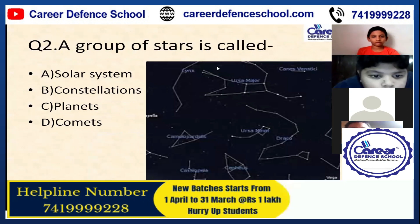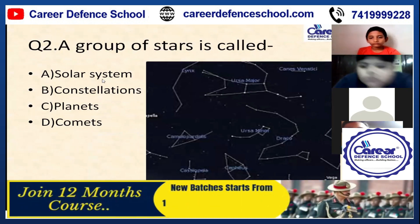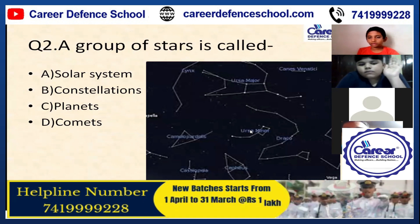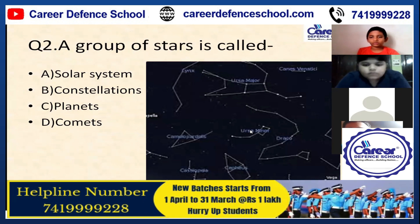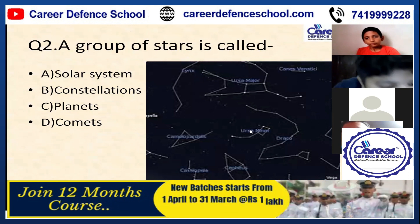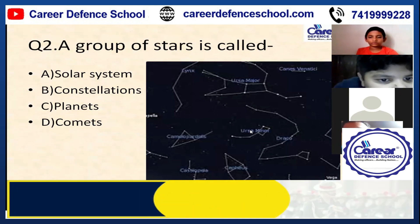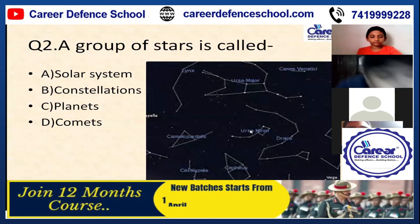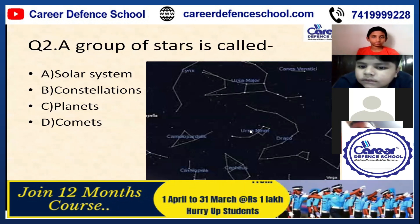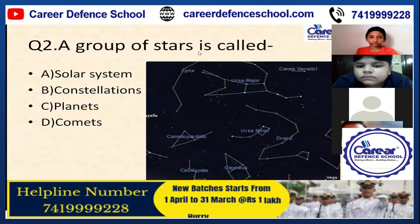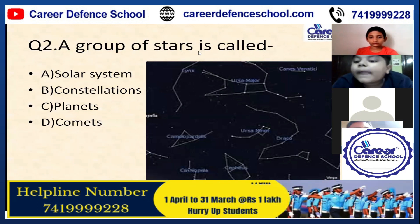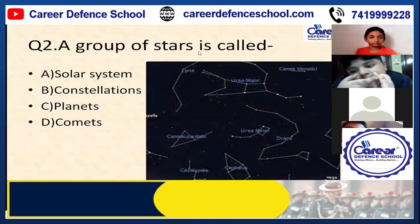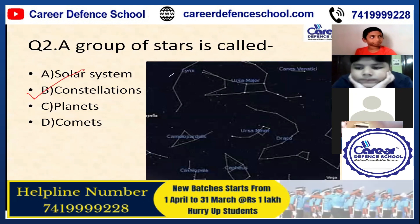Question number two: a group of stars is called — a group of stars which forms a pattern in the night sky. Its answer is B.